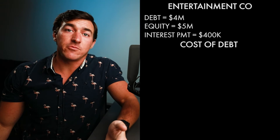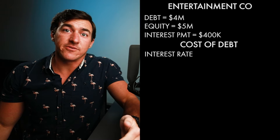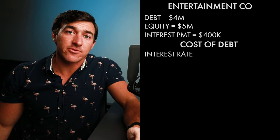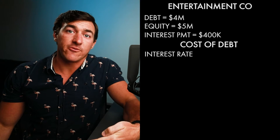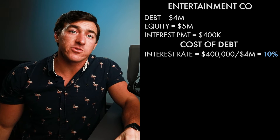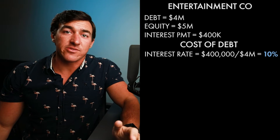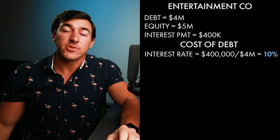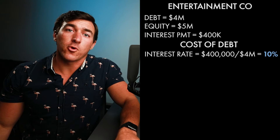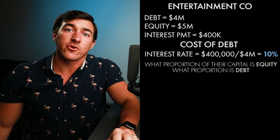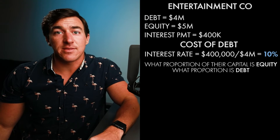The cost of debt is really just the interest rate. The easiest way to find the interest rate is to divide the amount paid in interest by the total debt. So for this situation, it's $400,000 divided by $4 million. That gives us 10%. Now we have to find out what proportion of their capital is equity and what proportion is debt.